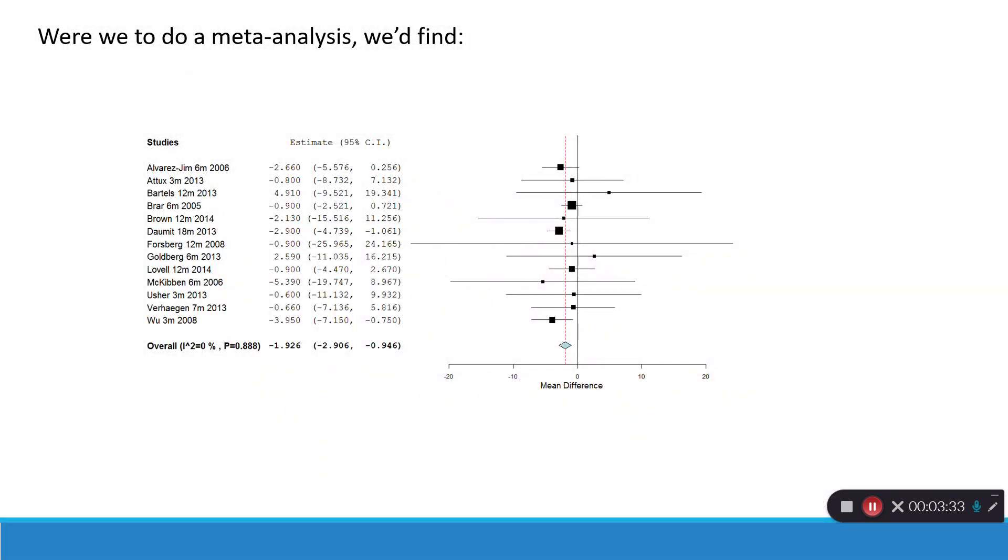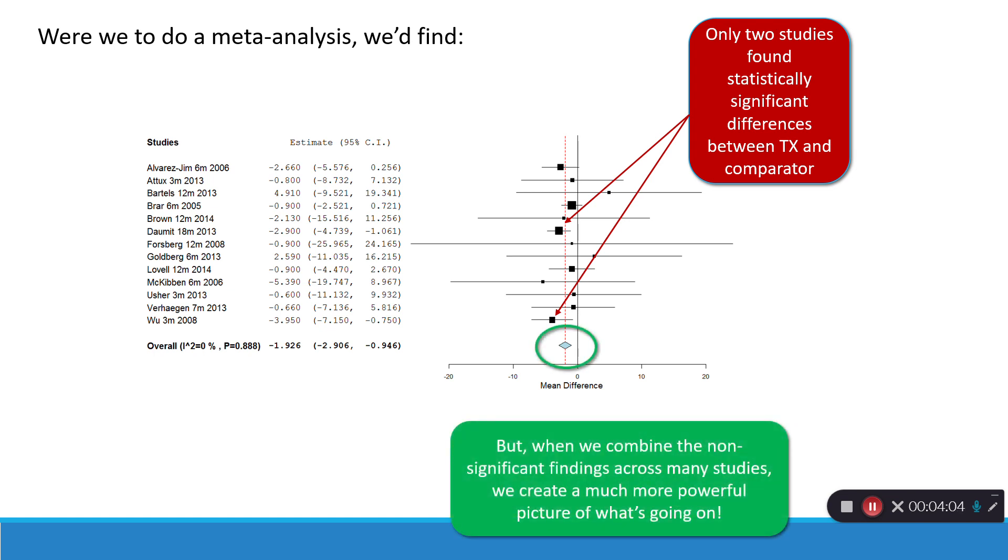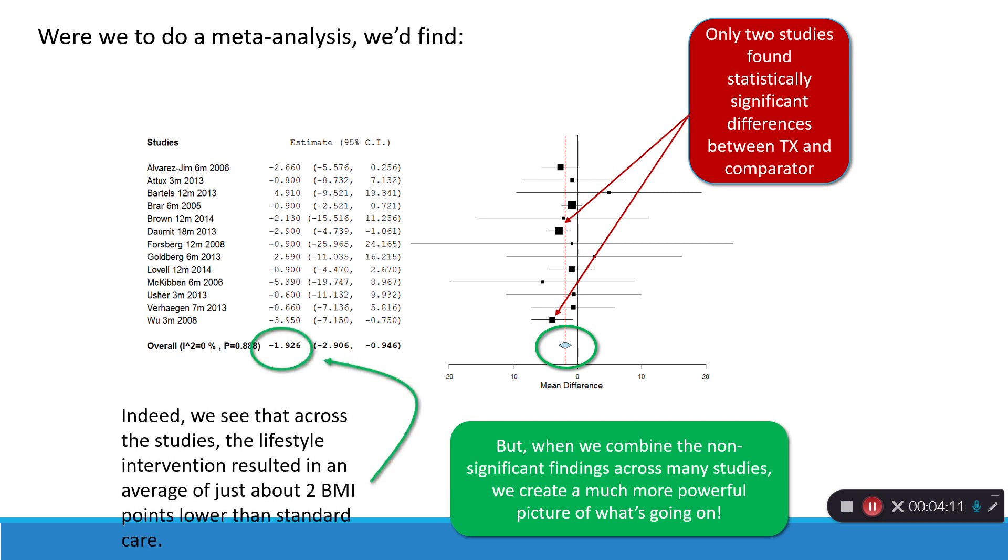So, let's say, rather than just vote count how many studies were statistically significant, we did a meta-analysis, which takes the data from all of the different studies and combines it. In a sense, it creates a much larger data set. Well, I want you to notice some things here. These are the only two studies that found statistically significant differences between the treatment, the weight loss program, and the comparator. However, when we combine the non-significant findings across many studies, we create a much more powerful picture of what's going on. Indeed, what we see that across studies, the lifestyle intervention resulted in an average of about two BMI points lower than standard care.